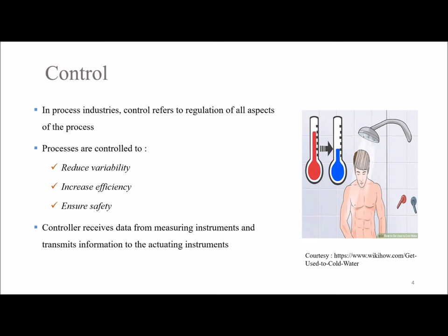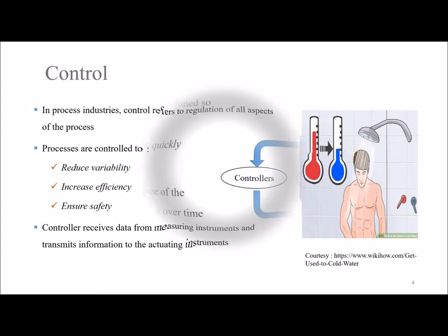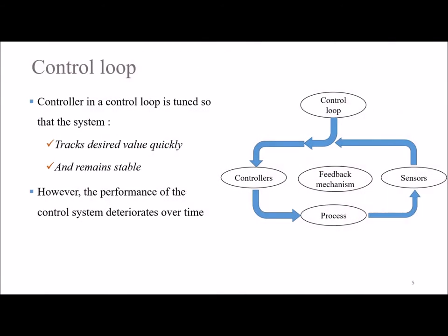In our example, our human skin that senses the temperature of water was the sensor, the knob was the control valve which was the actuator, and the human brain that processed the information to decide how much to actuate was the controller. This loop, which consists of the sensor, the actuator, the information of the process under control, and the feedback mechanism, is referred to as the control loop.